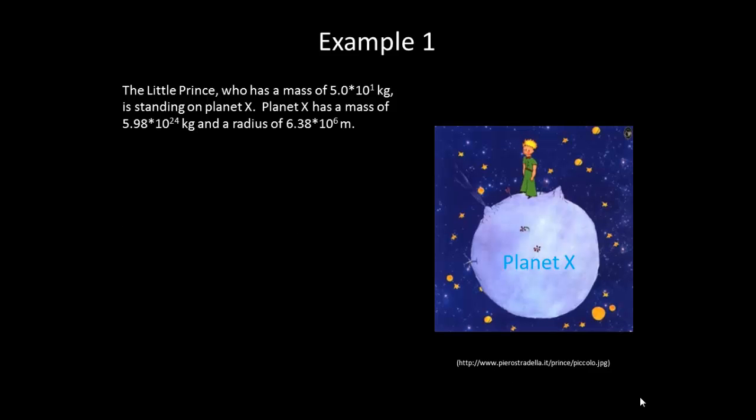So let's do an example problem. The little prince, who has a mass of 5.0 times 10 to the first kilograms, or 50 kilograms, is standing on planet X. Planet X has a mass of 5.98 times 10 to the 24th kilograms, and a radius of 6.38 times 10 to the sixth meters. What is the force of gravity acting on the little prince by planet X? Pause the video and go ahead and try to solve for it.